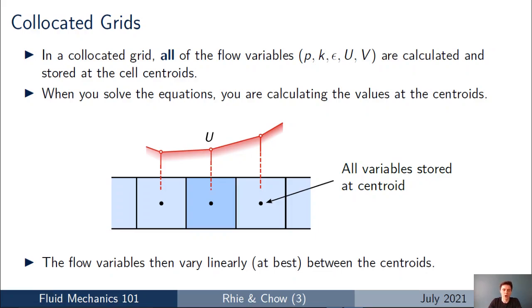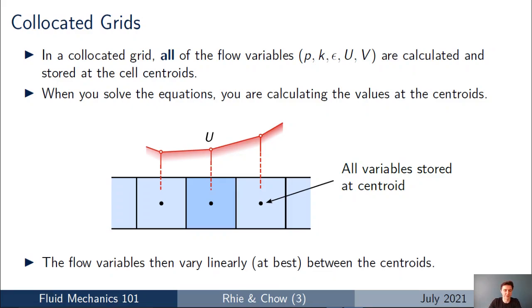A quick reminder: on a co-located grid all of the flow variables — velocity, temperature, pressure, turbulent kinetic energy — are calculated and stored at the cell centroid. When you solve the Navier-Stokes equations and the scalar transport equations you're calculating the value of these field variables at the centroid of the cells in your mesh, and between those cell centroids the flow variables vary linearly at best. This is different to the staggered grid where the velocity was calculated on a separate grid centered around the face center.